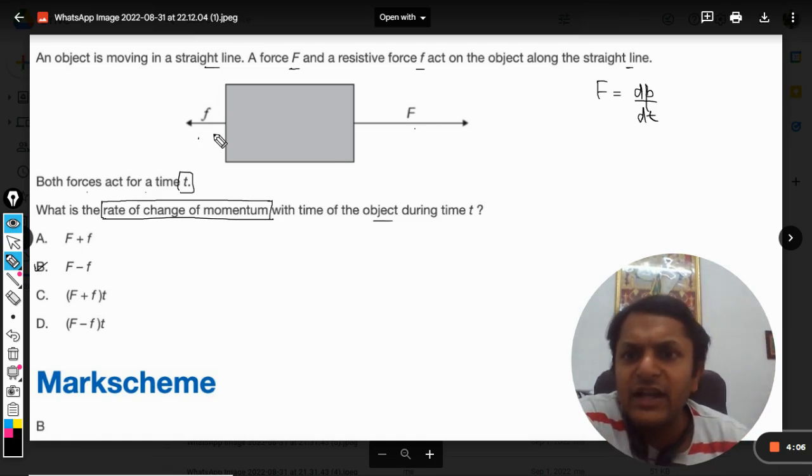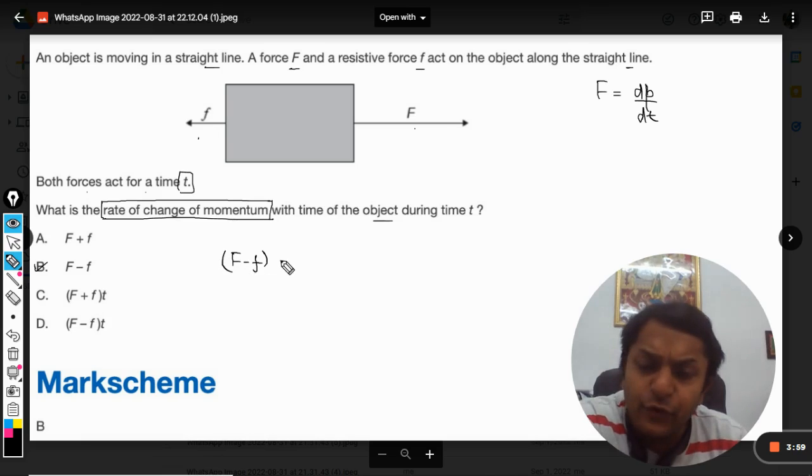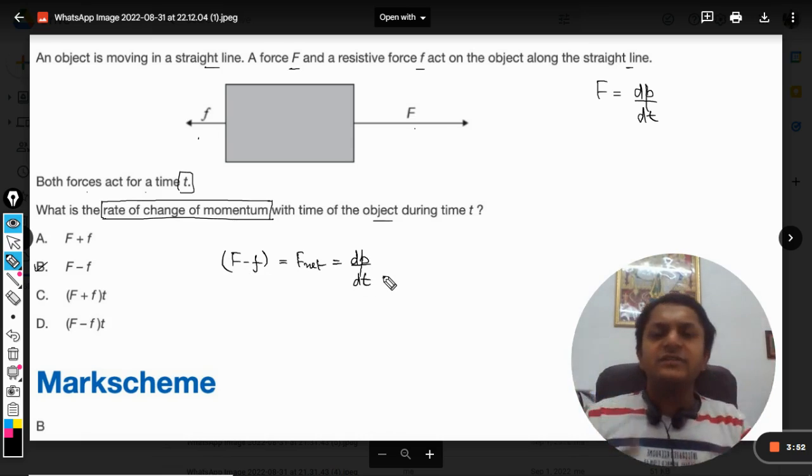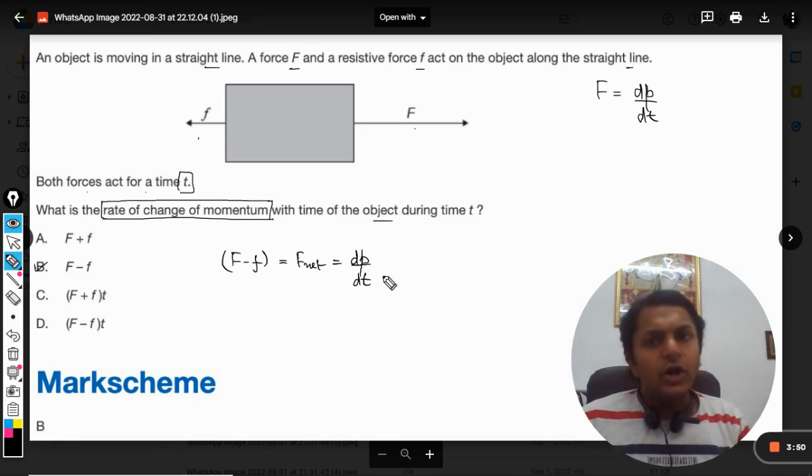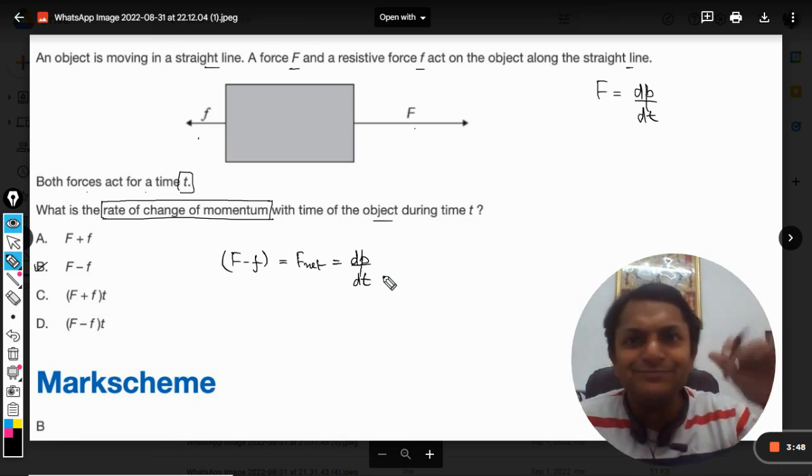...will be capital F minus small f, because the other f is acting in the opposite direction. So this is the net force F_net, and this should be equal to the rate of change of momentum. There is nothing difficult in this question. With this, all the best, bye!